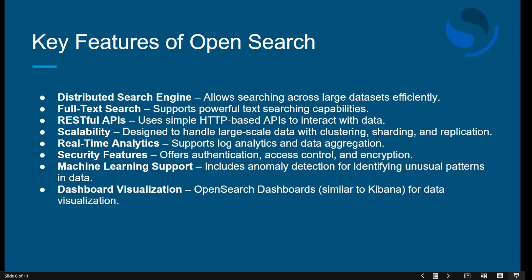The next feature is full-text search. OpenSearch supports powerful text searching capabilities — you can search data using keywords, phrases, or specific filters. It also supports wildcards and fuzzy search. For example, if you want to search error logs, OpenSearch can help you find them accurately.